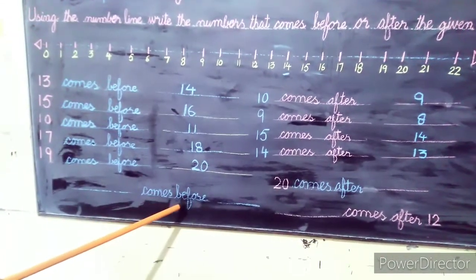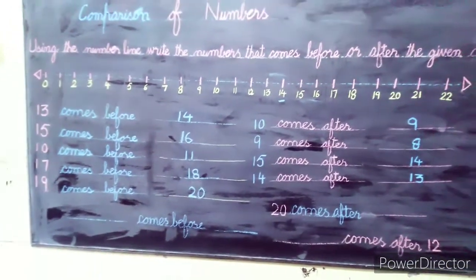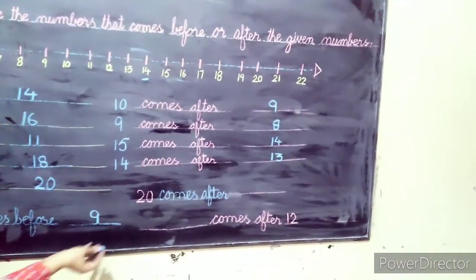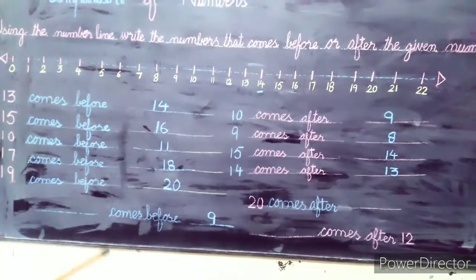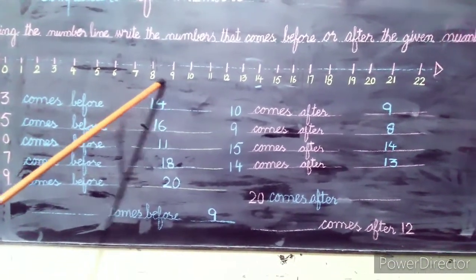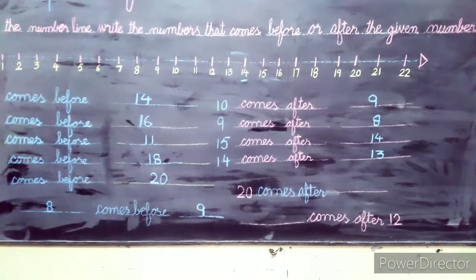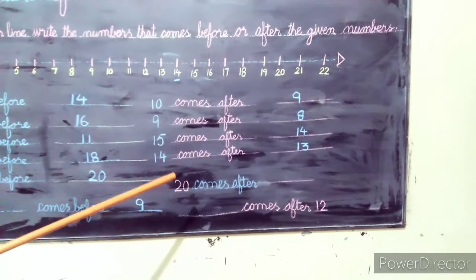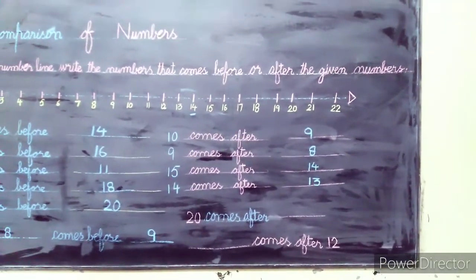Dash comes after — for example, if there is no number given, I will recall the number line. Dash comes before 9: from the number line, 8 comes before 9. So the answer is 8. Next: 20 comes after — which number comes after 20? From the number line, 19 comes before 20, so 19 is the answer before 20.